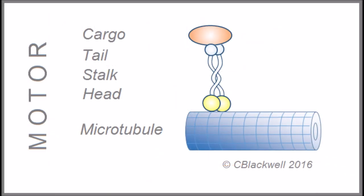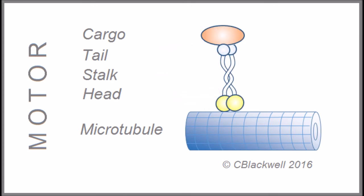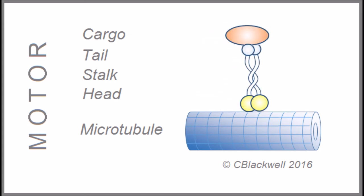This is a simplified version of the transport motor mechanism. There is a head region attached to a microtubule. There is a tail region holding onto the cargo package, with a stalk connecting the two. The motor head uses ATP hydrolysis to generate step-like movements along the microtubule.